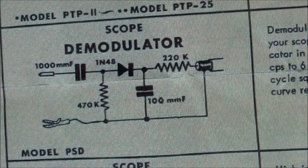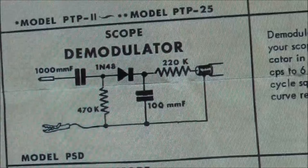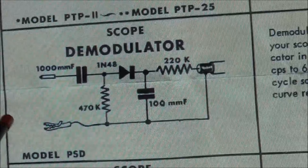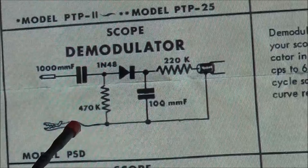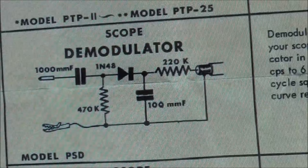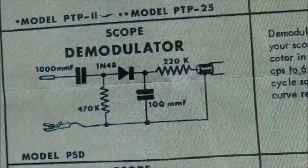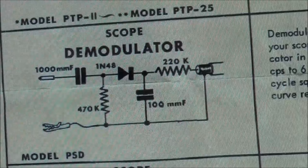This is basically what our scope probe consists of. As you can see, this is where the alligator clip is, a 0.001 microfarad capacitor, 1N48 diode, 220k ohm resistor, and there's another capacitor and resistor in series. To find this you'll just Google Icom scope demodulator probe. You'll find this manual on the Bama website and it lists several different probes that you can build.